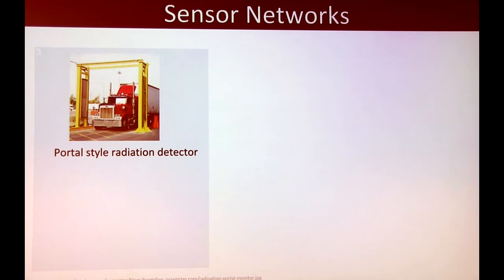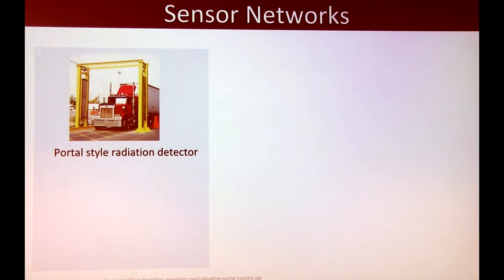Traditional sensors like a portal-style radiation detector and seismometers are extremely accurate and useful, but they're very expensive, which makes them hard to deploy in areas that lack infrastructure. This also makes it much less likely to achieve a dense network of expensive sensors. Instead, you end up with a sparse network and must fuse data between sparse sensors.